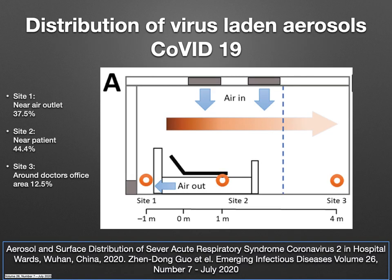In this slide you can see the distribution of virus-laden aerosols in various sites in the theatre or ICU. Site 1 is near the air outlet, site 2 is near the patient, and site 3 is around the doctor's office. When aerosol concentrations were calculated, site 1 showed about 37.5%, site 2 near the patient showed about 44.4%, and site 3 around the doctor's office showed 12.5%. This study is from China in 2020, and it means that airborne contagious aerosols can leak from near the patient to adjacent areas.